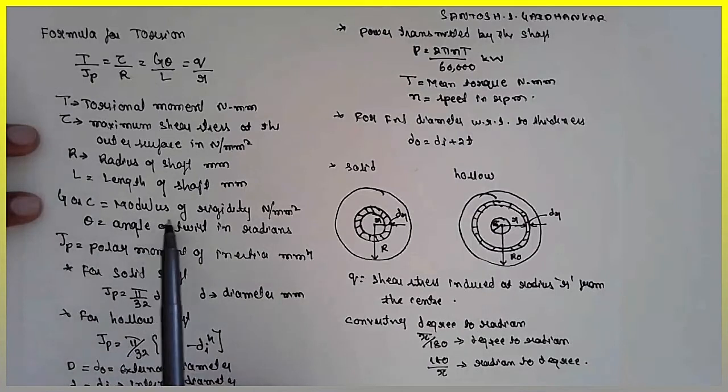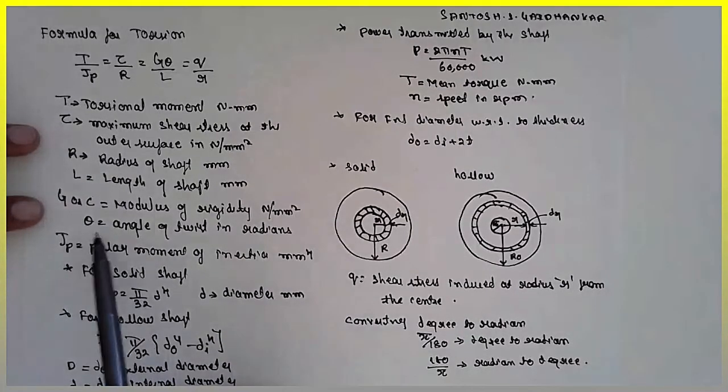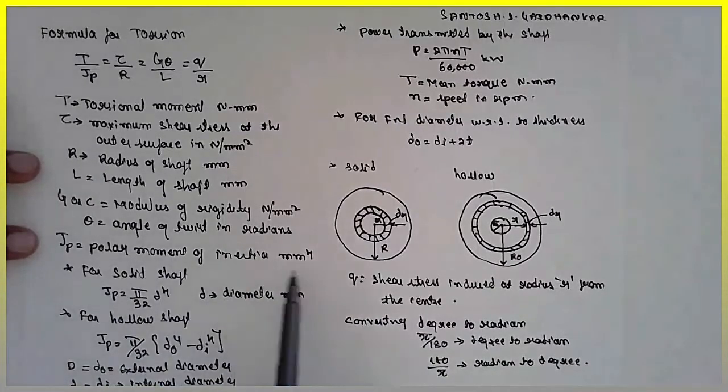G or C referred as modulus of rigidity has to express in terms of newton per mm square. Theta is the angle of twist in terms of radians.